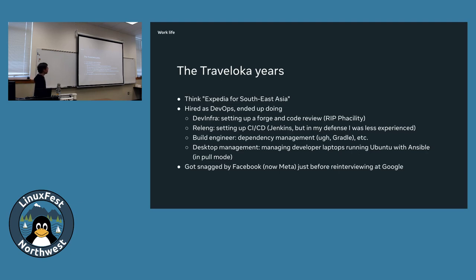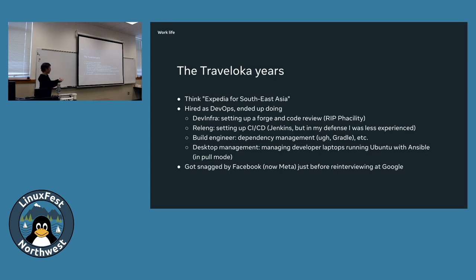I moved to a different company — a travel booking site like Expedia but in Asia. I was supposed to do DevOps, but I arrived and there was no source control — everyone was committing straight to GitHub without code review, building stuff on their laptops and deploying to prod. So I ended up doing all these things: set up a code forge, did code reviews. We used Phabricator by accident — not because it came from Facebook, it just looked nice. Then we finally got Jenkins.